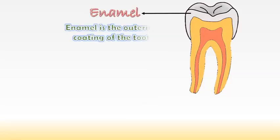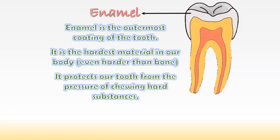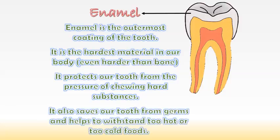Enamel is the outermost coating of the tooth. It is the hardest material in our body, even harder than bone. It protects our tooth from the pressure of chewing hard substances. It also saves our tooth from germs and helps to withstand too hot or too cold foods.